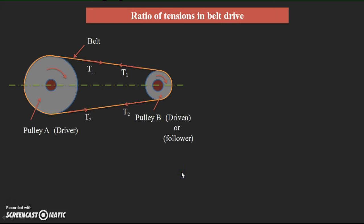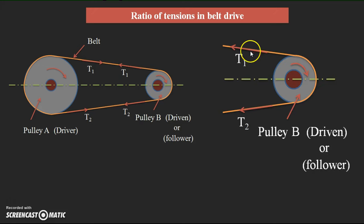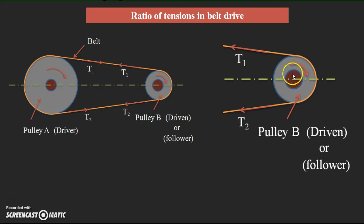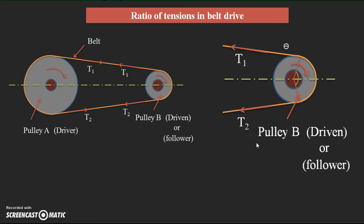Next, we go for finding the ratio of tensions in the belt. We already said two tensions T1 and T2 are acting. For these two tensions we can give a ratio. To derive that equation, we take the reference of the follower, which has two tensions T1 and T2 with respect to it. For deriving the formula, we draw the two lines where the belt is leaving the pulley.